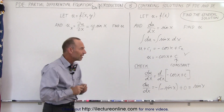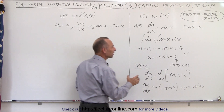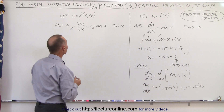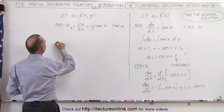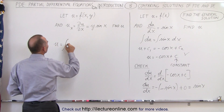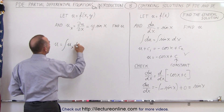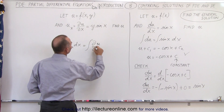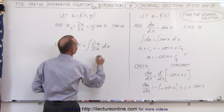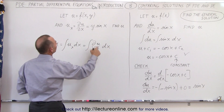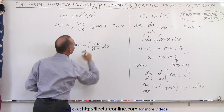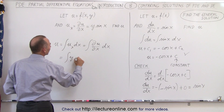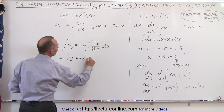When we do the same to a partial differential equation, instead of ending up with a constant we're going to end up with something different. To find u, that's going to be equal to the integral of u sub x times dx, which is the integral of the partial of u with respect to x times dx. The partial of u with respect to x is y times the sine of x, so u is equal to the integral of y times the sine of x times dx.